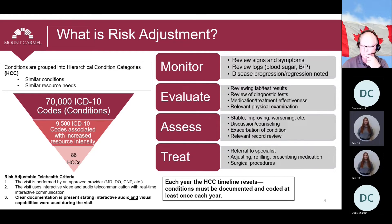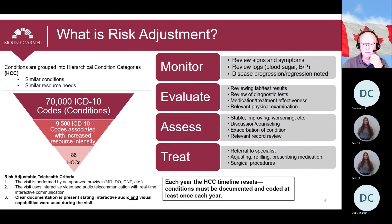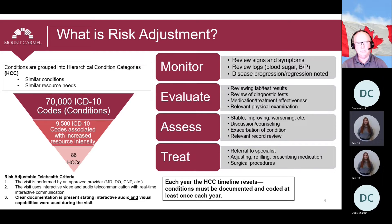Once that is done, the data is normalized so that the average Medicare Advantage patient has a risk score of about one. Around 9,500 diagnostic codes are determined to affect risk, and they map to what is called a hierarchical condition category, or an HCC. An HCC is a group of chronic condition diagnoses that are clinically similar and have been determined to have similar effect on resource utilization — what is called their weights. These weights calculate the clinical portion of a patient's risk score.